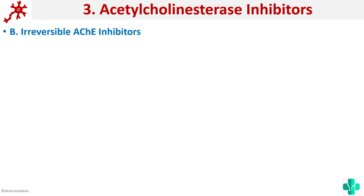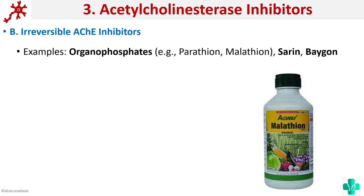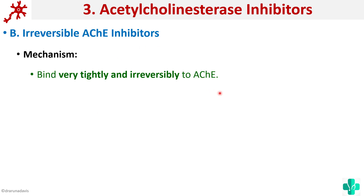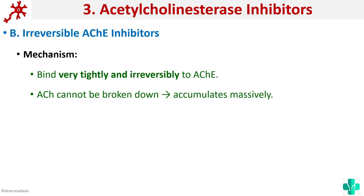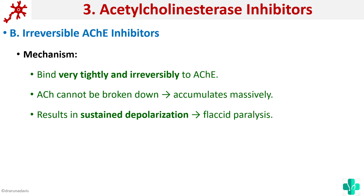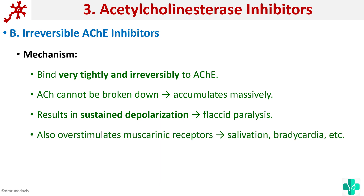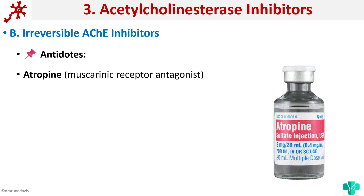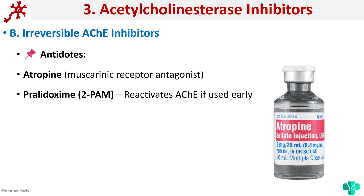Irreversible acetylcholinesterase inhibitors are a bad thing — once they bind to acetylcholinesterase, they do not leave. Examples are organophosphates, which are usually seen in pesticides and insecticides. The mechanism of organophosphate poisoning is by creating a depolarizing block: they bind very tightly and irreversibly to acetylcholinesterase, so acetylcholine cannot be broken down, it accumulates massively, causing sustained depolarization and flaccid paralysis. Additionally, they overstimulate muscarinic receptors, which is why patients show excessive salivation and bradycardia. Antidotes include atropine, a muscarinic receptor antagonist, or pralidoxime, which reactivates acetylcholinesterase if used early.